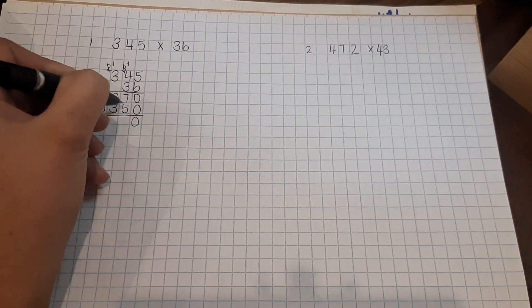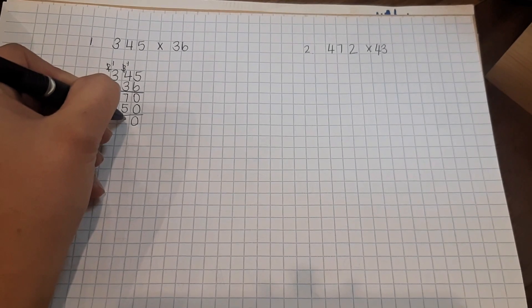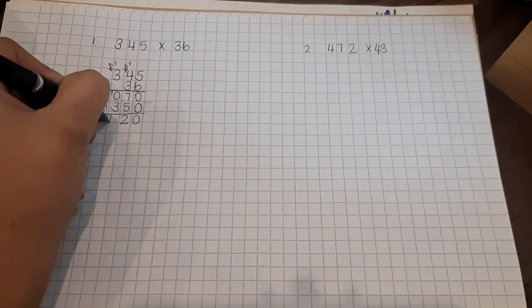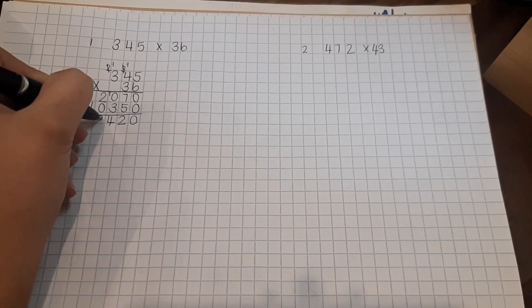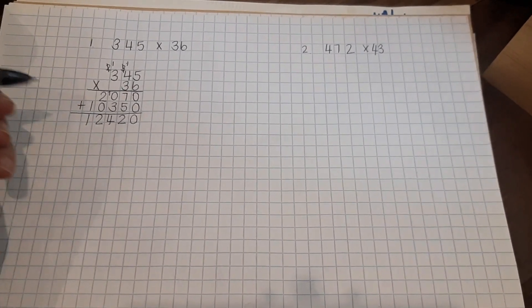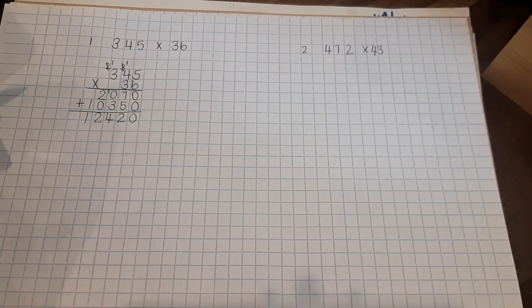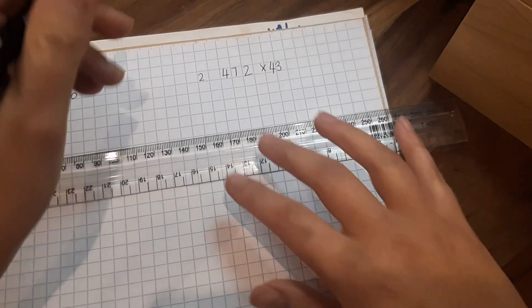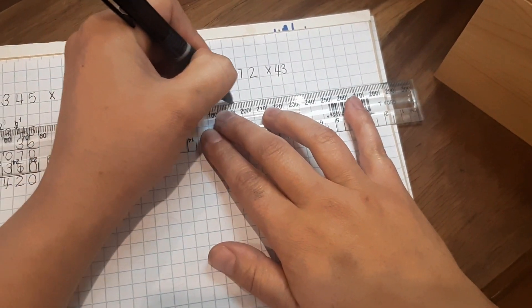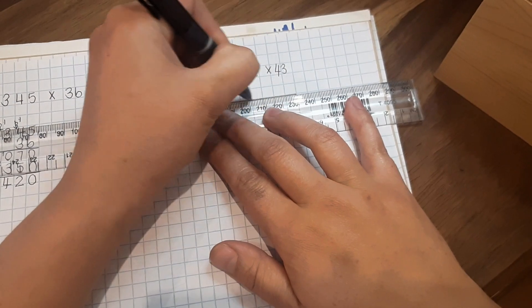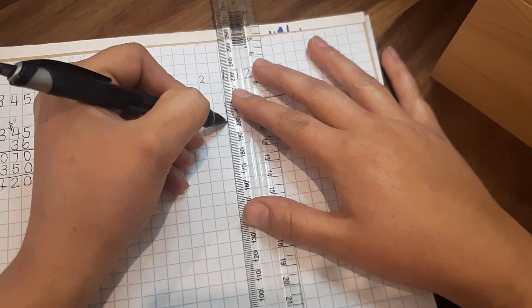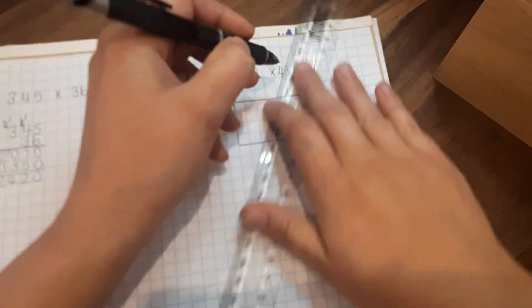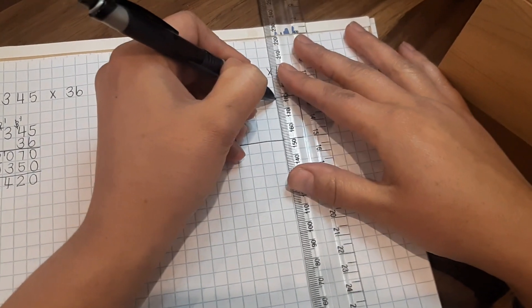Now we have to add the two numbers together. 0 plus 0 is 0, 7 plus 5 is 12, 2 plus 3 is 5 plus 1 is 6, 1 plus 1 is 2. And there you go. I'm going to use the block method for the next one. 472 times 43. Each digit gets a block. I'm going to use two blocks so it's a little bit bigger and you guys can see it easier.